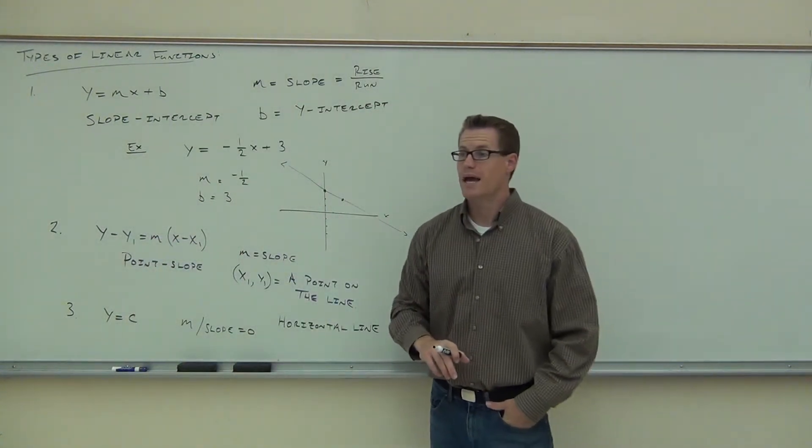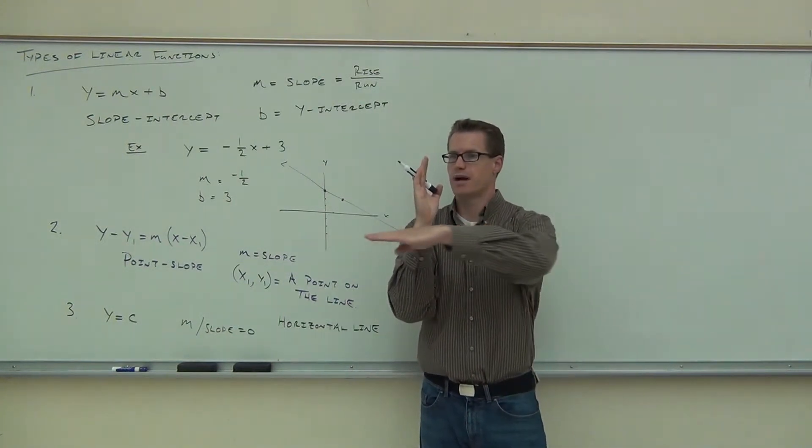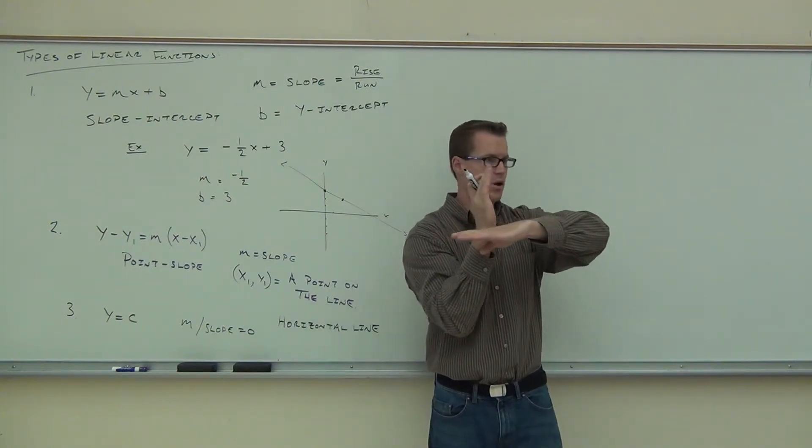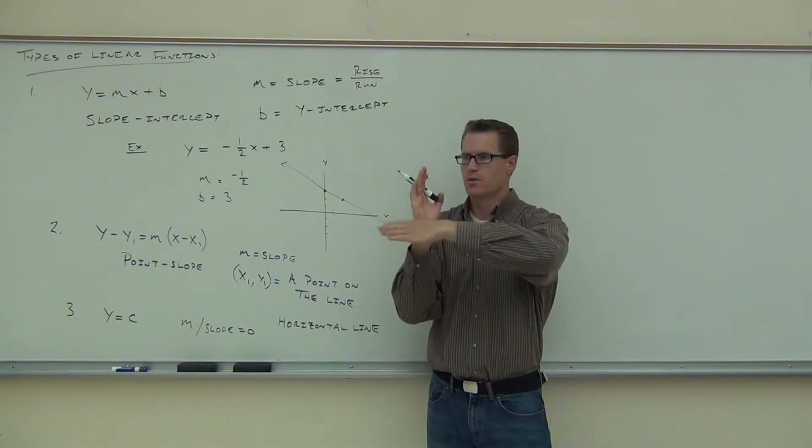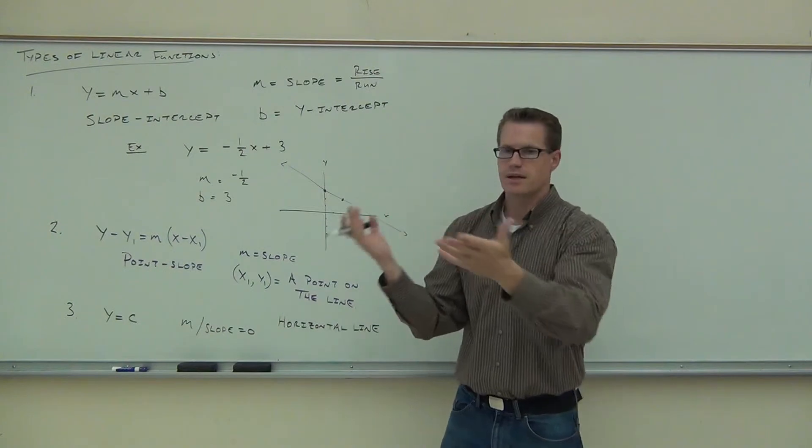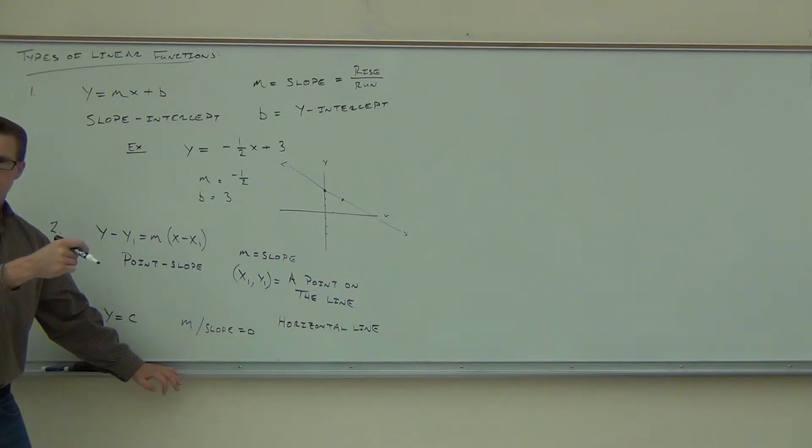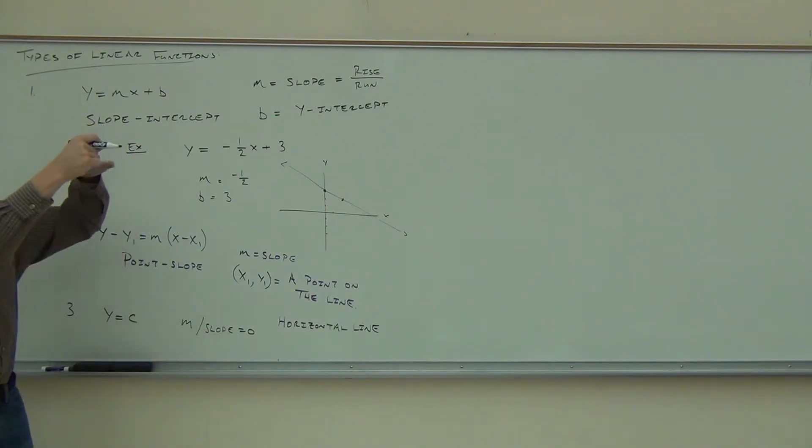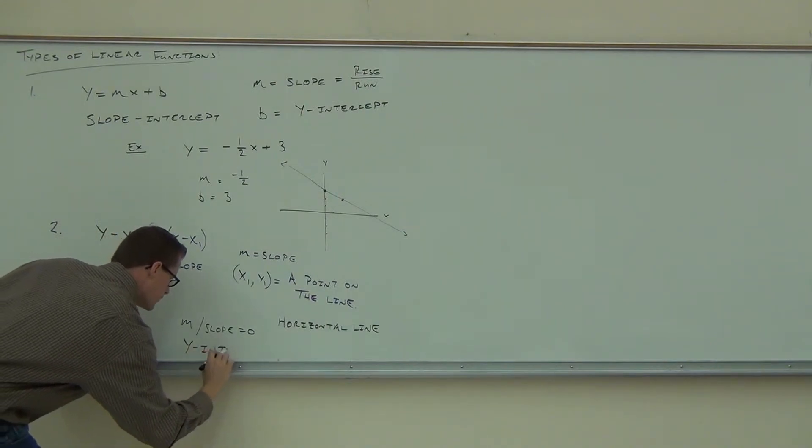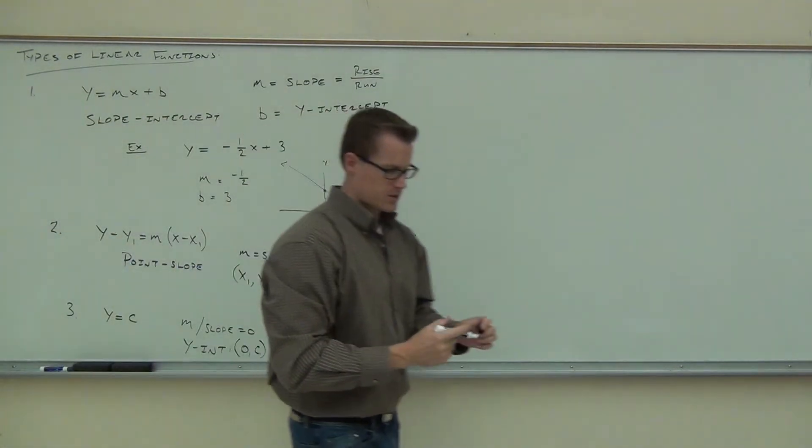Question, do we have a y-intercept? Are we going to cross the y-axis? Sure, horizontal line will cross the y-axis. Where? Sure. So the constant says you're always this number, right? So if y equaled 3, we'd always be a 3. If y equaled 7, we'd always be a 7. So we're going to cross that specific number. So the y-intercept will be 0, c. 0 for the x and then c for the y-intercept. We cross that constant. Maybe we'll practice a couple of those in just a bit.